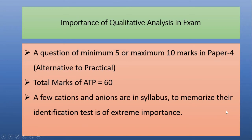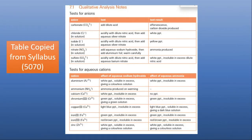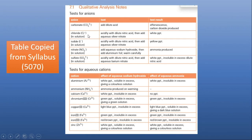I am going to share a table copied from your syllabus — subject code 5070. This table shows there are only five anions whose tests and observations you have to memorize, and only eight cations. For cations, there are only two reagents: aqueous sodium hydroxide and aqueous ammonia. For anions, different reagents are used for different anions. You must memorize their reagents and observations with clear concepts so you do not mix up the tests — for example, writing the test for nitrate when asked about chloride, or vice versa.